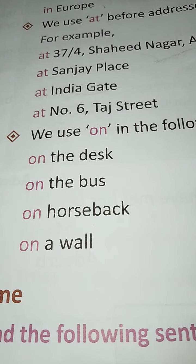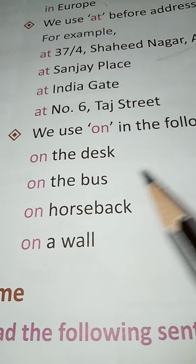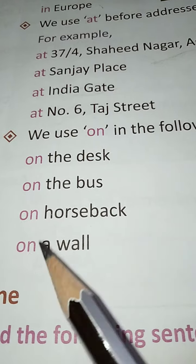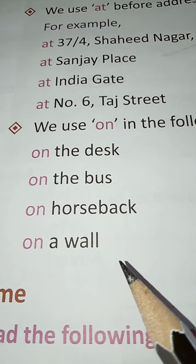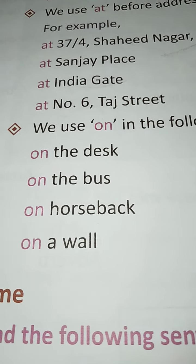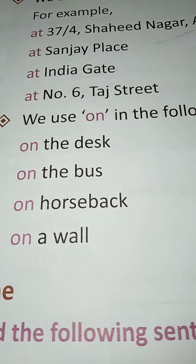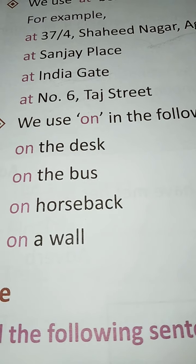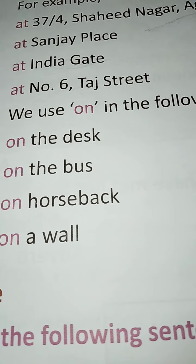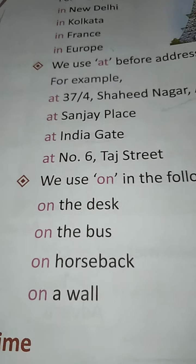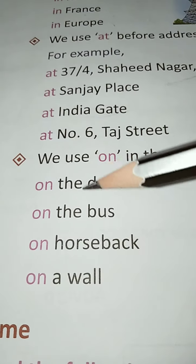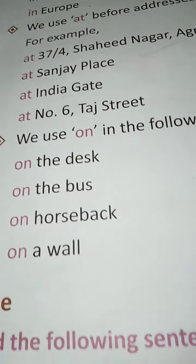We use 'on' in the following expressions: on the desk, on the bus, on horseback, on a wall. So when we say something is on a wall, table, or bus, we use the preposition 'on'. So here we have studied the use of in, at, and on for place.